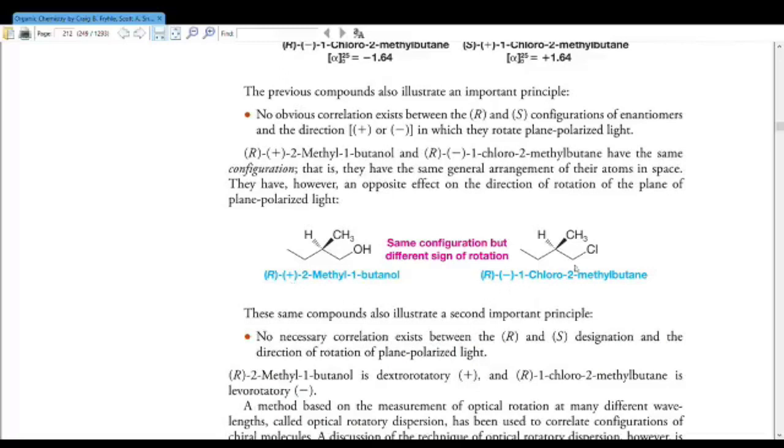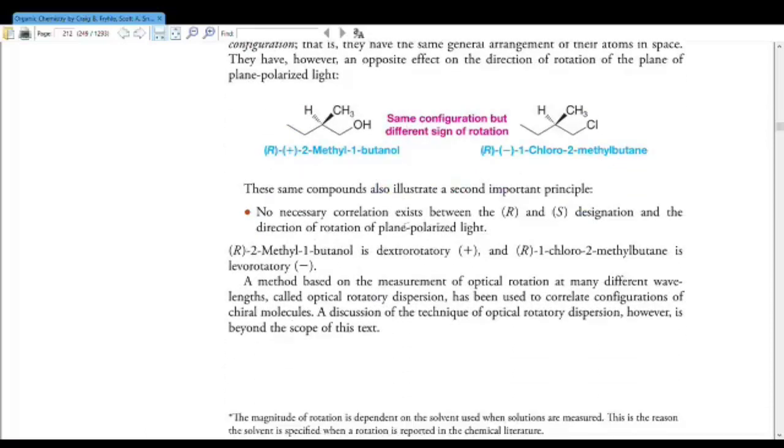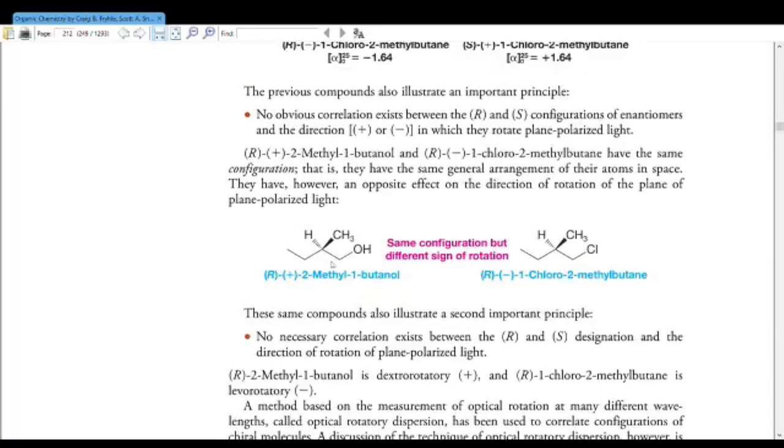There's just no way to predict whether it's going to be plus or minus, dextro or levo, based on whether it's R or S. Also, no necessary correlation exists between the R and S designation and the direction of rotation of plane polarized light. So R-2-methyl-1-butanol is dextrorotatory, and R-1-chloro-2-methyl-butane is levorotatory. So don't get tripped up by this. This is why you see it written like this. This is the complete way of writing it.